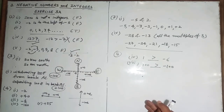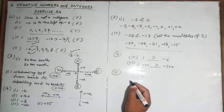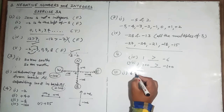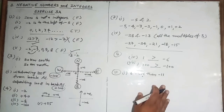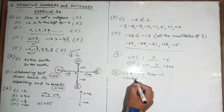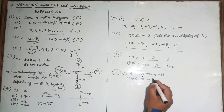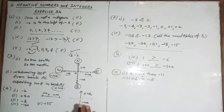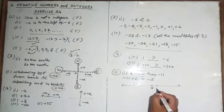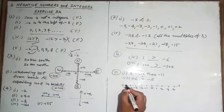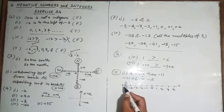Question number eleven: represent on a number line. First part: six more than minus eleven. Minus eleven plus six equals minus five. On the number line, mark zero, then minus one through minus five, and highlight minus five as the answer.